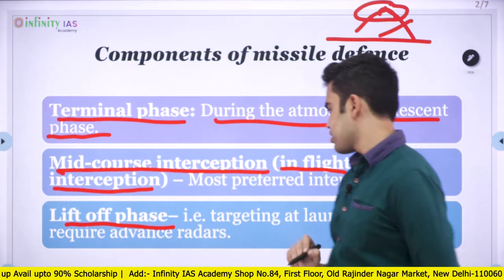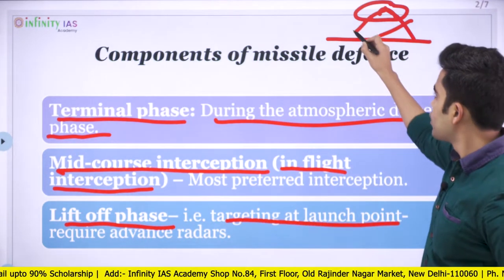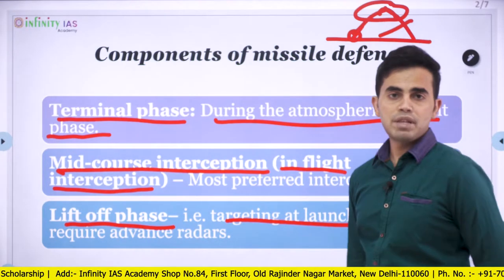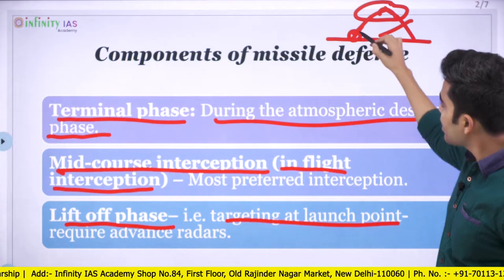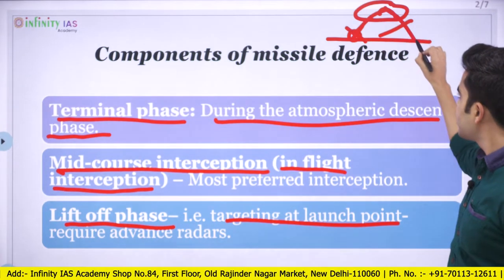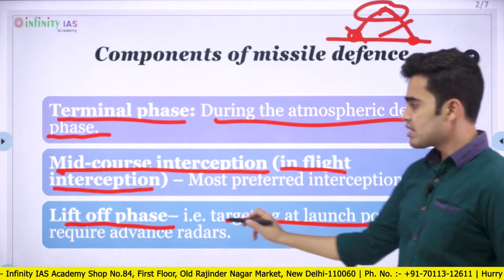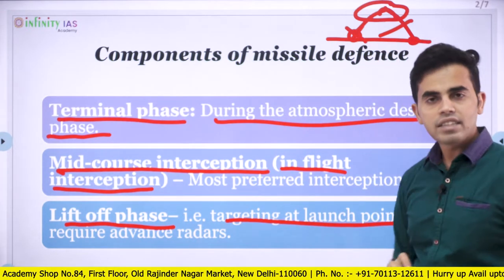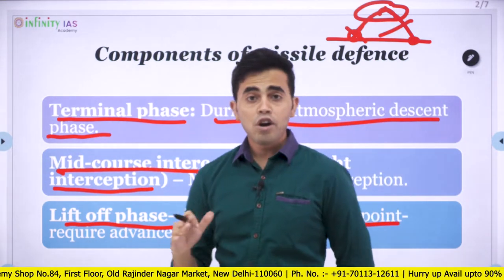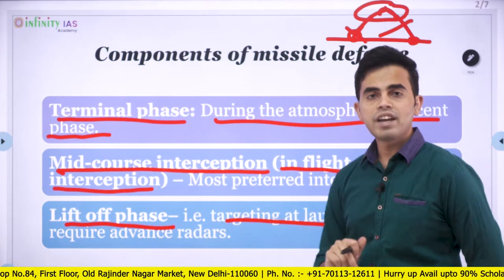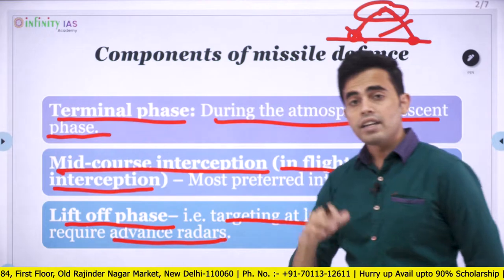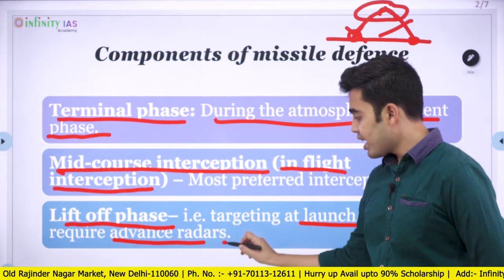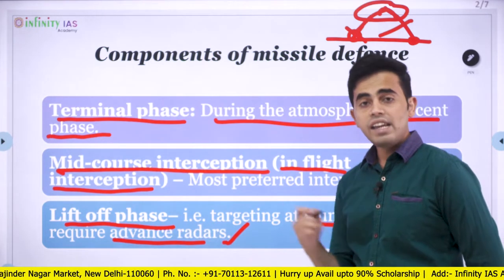Then comes the lift-off phase — targeting at the launch point. The missile will be launched here, and we can intercept it even before or just after lift-off, ensuring it doesn't reach our territory. However, the lift-off phase is very difficult, because the launch point will normally be in enemy territory. To intercept at this phase, we need very advanced radars that can scan the entire enemy territory and identify a missile being launched. This requires a very high level of technology.